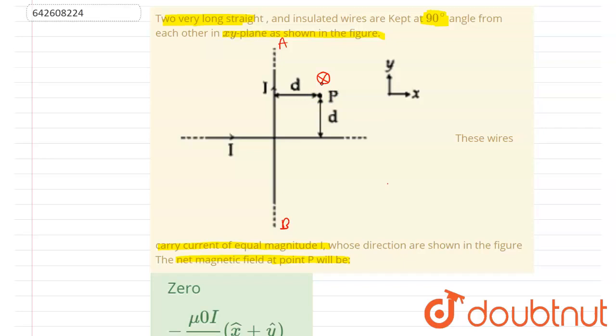Similarly, if I keep the direction of the thumb in the direction of current flowing in CB wire, then the magnetic field at P because of this CB wire will be outward. So this is because of the CD wire and this is because of the AB wire.